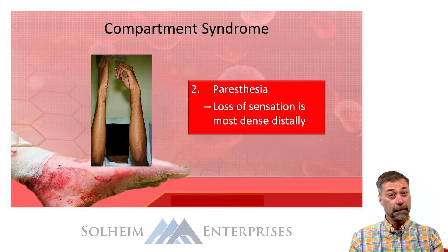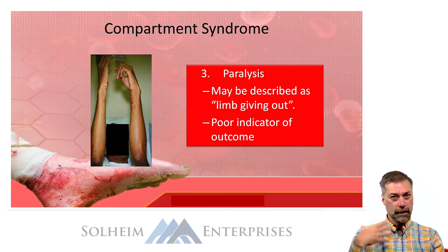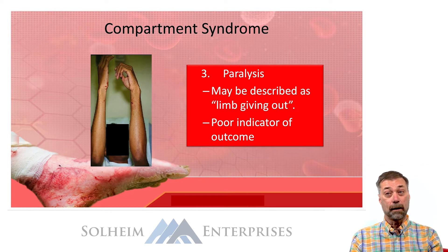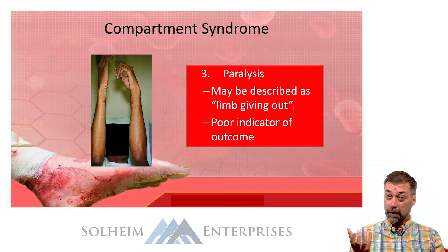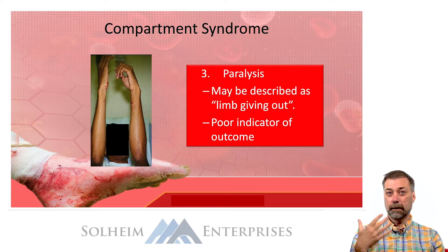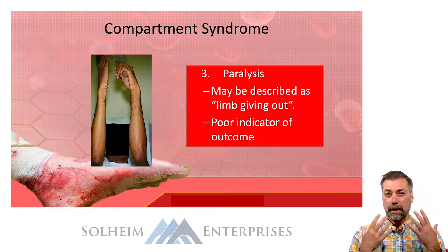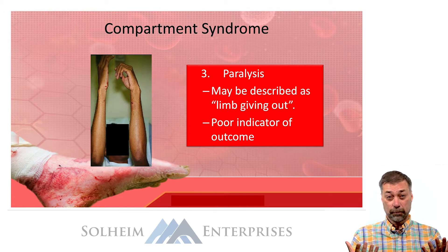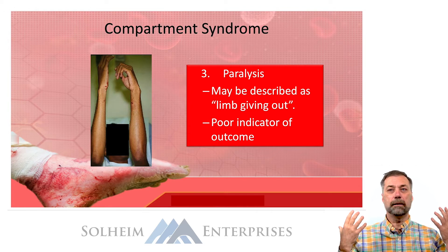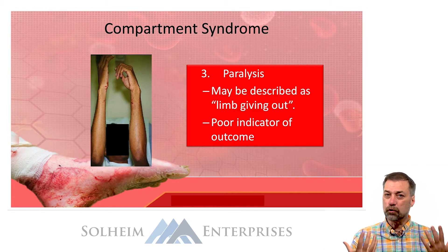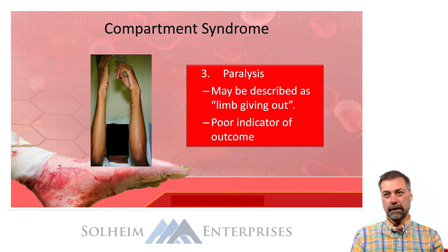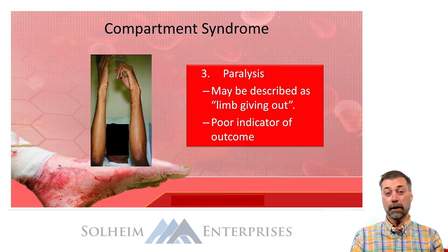The third finding is paralysis, and this is considered a very late finding — this is where you're starting to get into a lot of trouble. The pressure inside the compartment has to be pretty significant to block nerve impulses. At this point, nerve impulses are interrupted due to the pressure and the patient may feel like the limb just gave out, with no strength left. Look at the young man on the screen — he can't even hold his left hand up. It is a poor indicator of outcome if you wait for this finding.